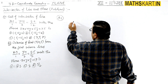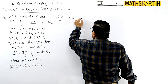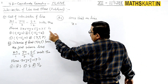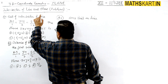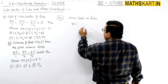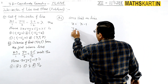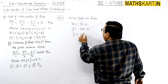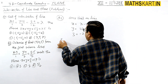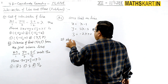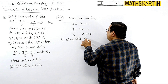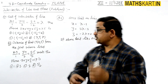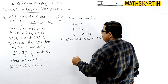Any point on the line can be written using lambda. The x-coordinate becomes (λ - 1), y-coordinate becomes (3λ - 3), and z-coordinate becomes (-2λ + 2). Now, if this point lies on the plane, it must satisfy the plane's equation, because we need to find the point of intersection.